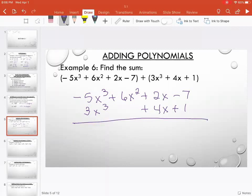And then you just add the coefficients. So negative 5 plus 3 is negative 2, and you keep the x cubed. There's nothing to add to the x squared, so you keep 6x squared.